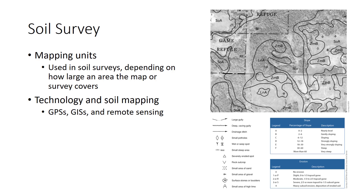Soil survey maps are drawn to scale appropriate to the area and detail needed. The larger the scale, the larger the area covered, but the less detail offered. Most county surveys are drawn to scales of 1 to 12,000 or 1 to 31,680. GPSs, GISs, and remote sensing are technological tools available to today's soil surveyors. GPS relies on 24 satellites in orbit about the Earth, positioned such that any point on the Earth's surface receives a signal from at least four satellites. Remote sensing gathers information about a site from a distance by using sensors mounted on planes or satellites. GISs are powerful computer software programs that organize and integrate data from a variety of sources, such as soil data from GPS points, remote sensing data, and all sorts of other relevant data, such as zoning information or watershed boundaries.